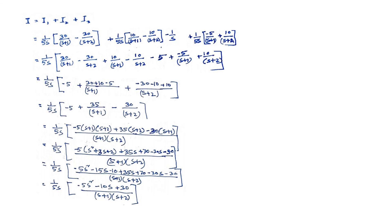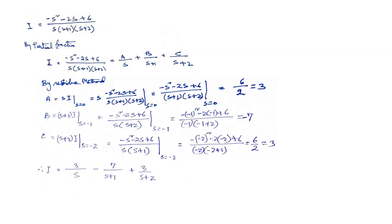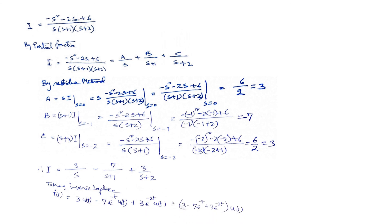Applying partial fractions and the residue method again, we get coefficients 3, −7, and 3. This gives the inductor current in Laplace form, and taking the inverse Laplace transform we find the time-domain answer. Writing neatly with u(t) factored out, this matches the answer given in the book. I hope this helps you understand how to solve this type of difficult problem by following the steps and practicing.